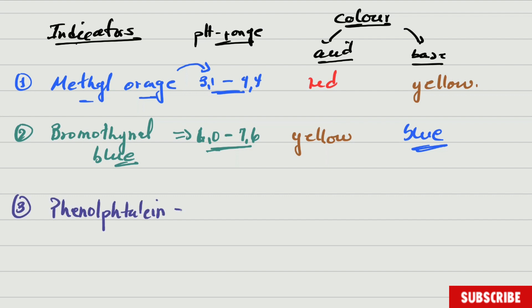The last indicator we are going to look at is phenolphthalein, which has a pH range of 8.3 to 10. The color change for phenolphthalein is colorless in acid and pink in bases. These are the three different indicators: methyl orange, bromothymol blue, and phenolphthalein. The range is very important, as is knowing the color changes, because they help you determine the end point during titration.